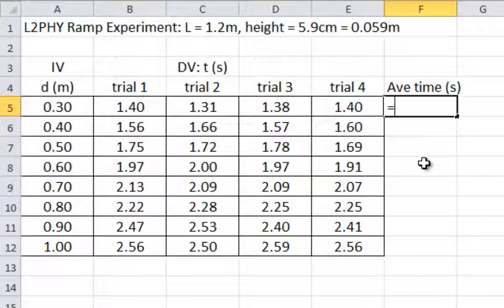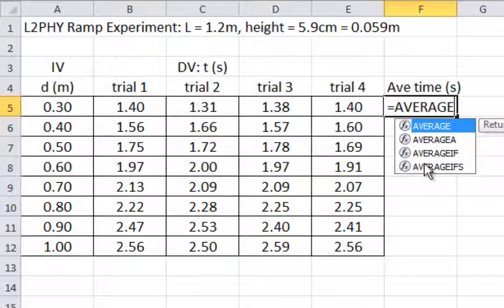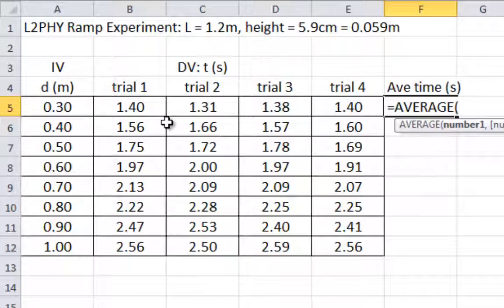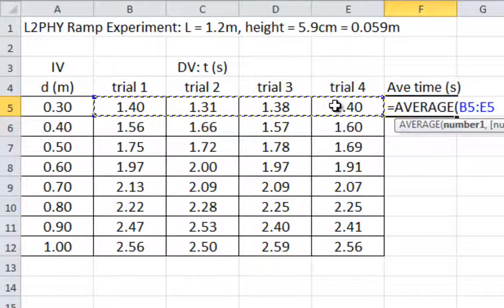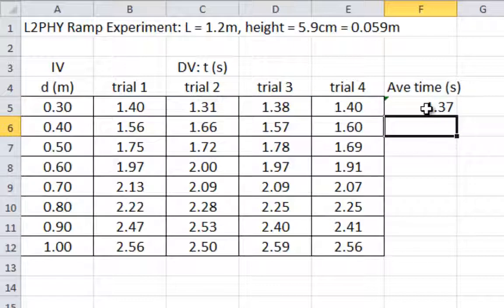You hit equals, you type in average, a bracket, you highlight the numbers you want averaged, you close the bracket, and you hit enter. There it is: 1.37 is the average of every number from trial 1 to trial 4.